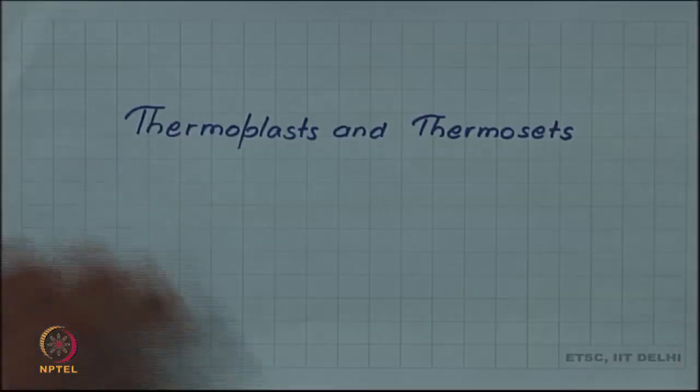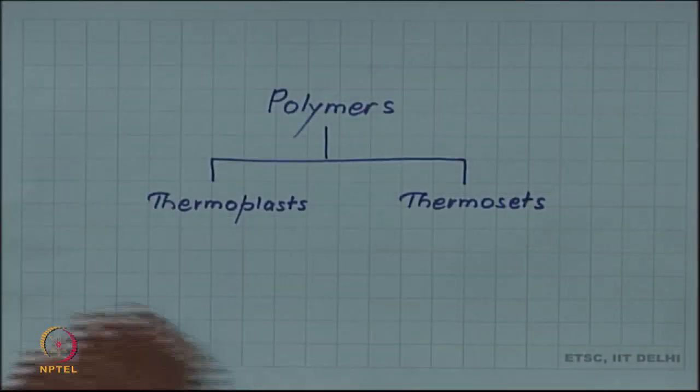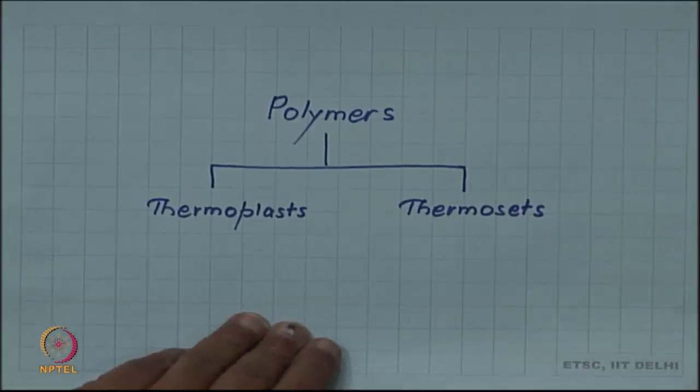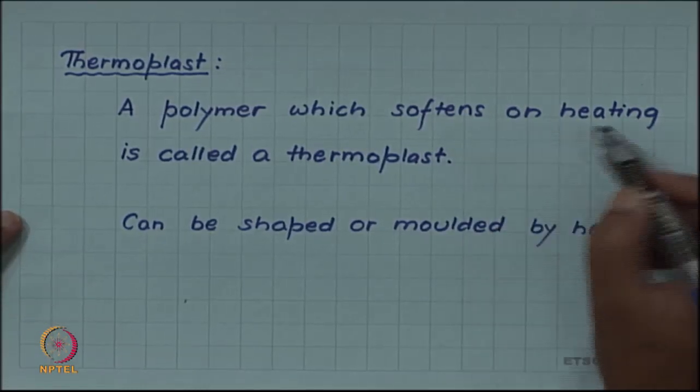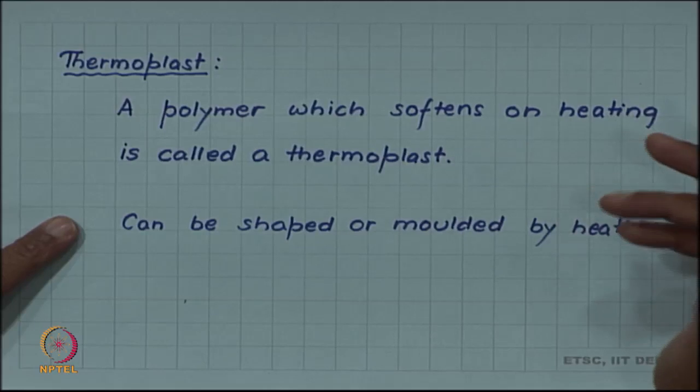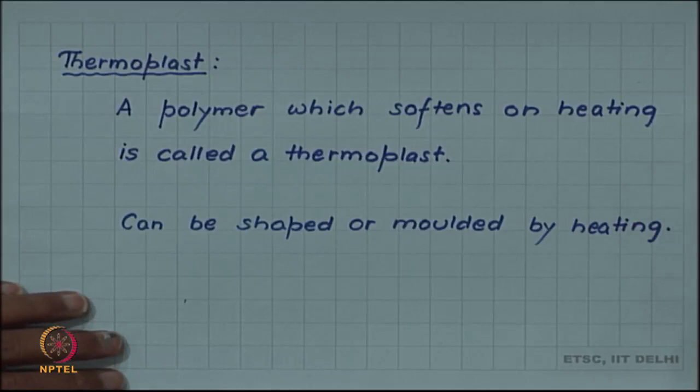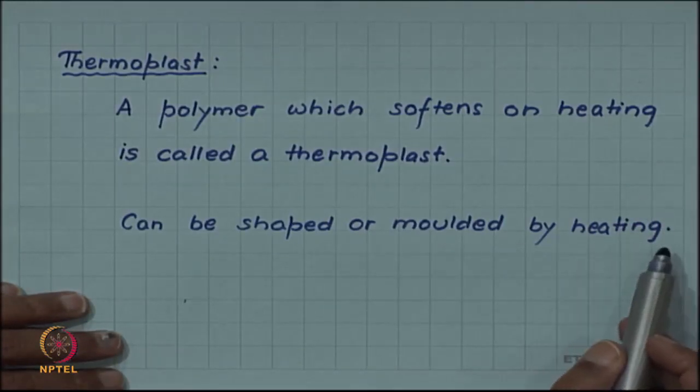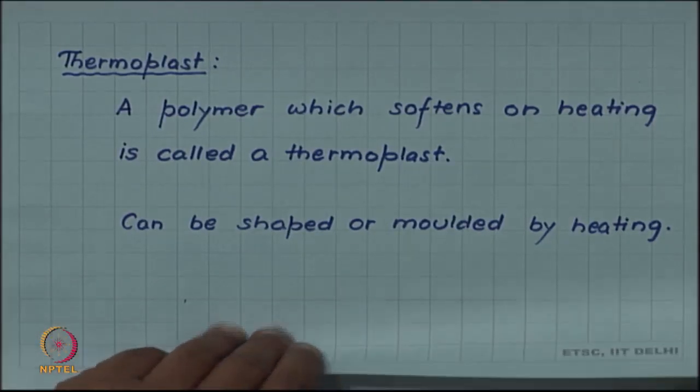Two kinds of polymers are identified: thermoplasts and thermosets. We will look at these two kinds. Polymers are classified as thermoplasts and thermosets. Thermoplast is a polymer which softens on heating. In fact, the plast means plastic and plastic means moldability. They can be molded or shaped by heating and that is why the term thermoplast is used for such polymers.